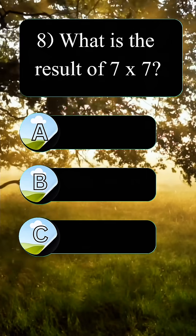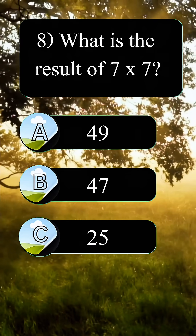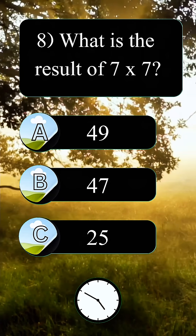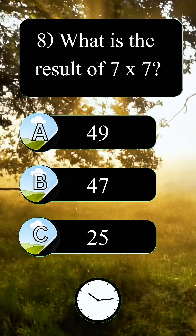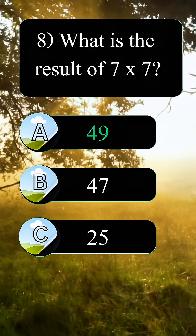Question 8. What is the result of 7 times 7? 49.